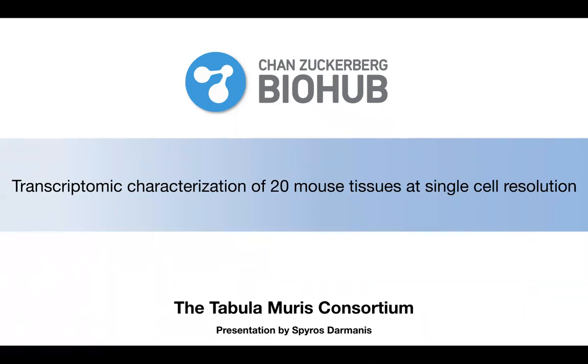All right, so hello everyone. My name is Spiros Tarmanis and I am one of the group leaders at the recently founded Chan Zuckerberg Biohub. Today I am going to talk to you about the Tabula Muris, a preprint we released on bioRxiv not so long ago where we attempted to characterize the transcriptome of 20 different mouse tissues at single cell resolution.